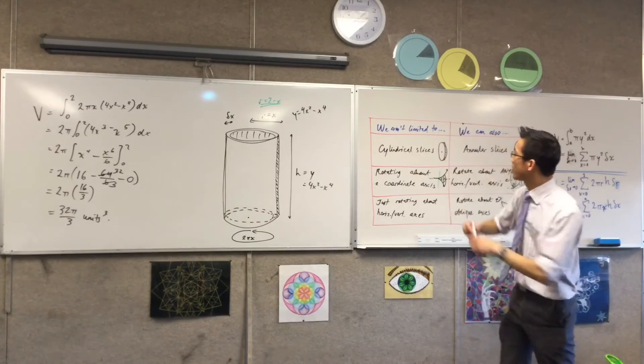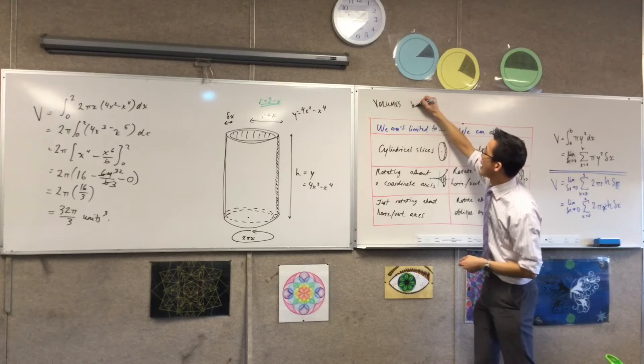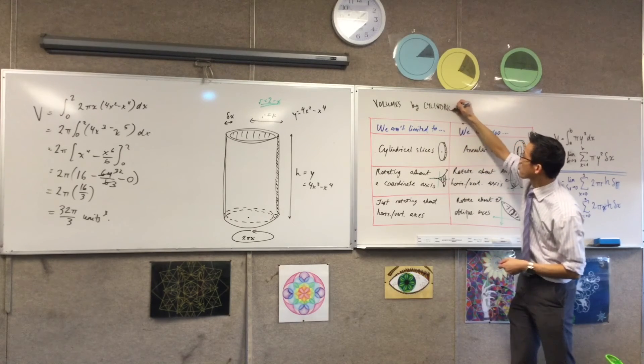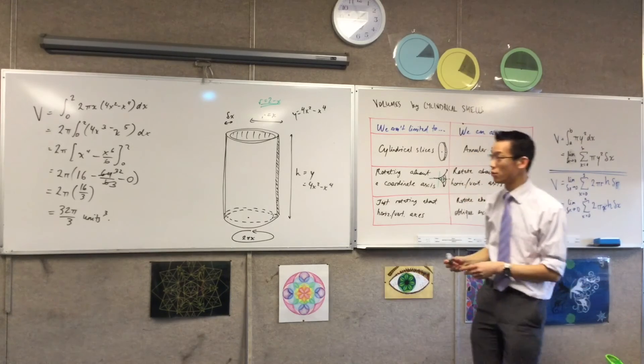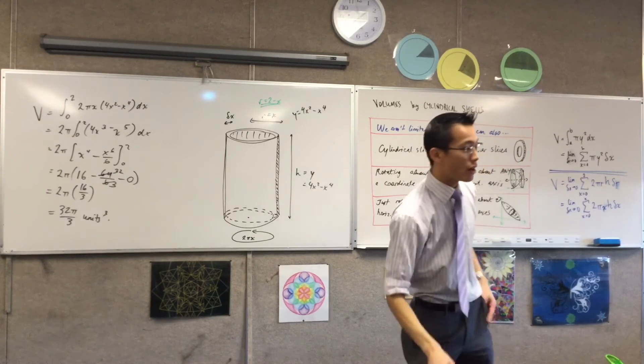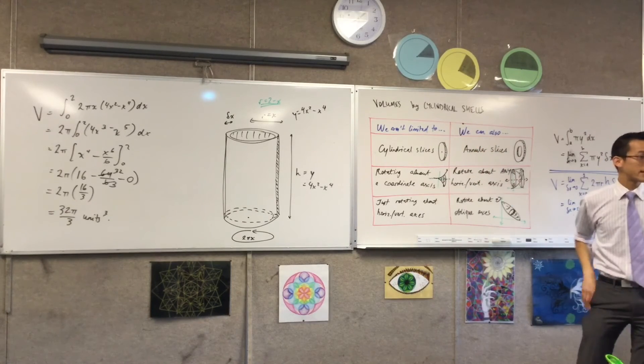Now, like I said, the heading, which I asked you to do after the fact, is volumes by cylindrical shells. In pretty much every case, just like the example I just went through with you, you can do any volume that's by annular slices, you can do by cylindrical shells.